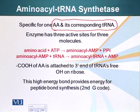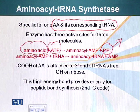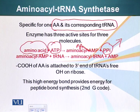The enzyme has three active sites for three molecules. It binds a specific amino acid and an ATP molecule. It catalyzes a reaction in which a pyrophosphate molecule is released, which releases a huge amount of energy. An amino acid and AMP bond is formed, which is a very high energy bond. This will ultimately be transferred to the tRNA in the second phase.